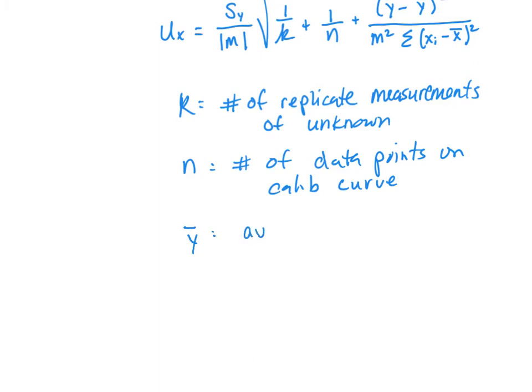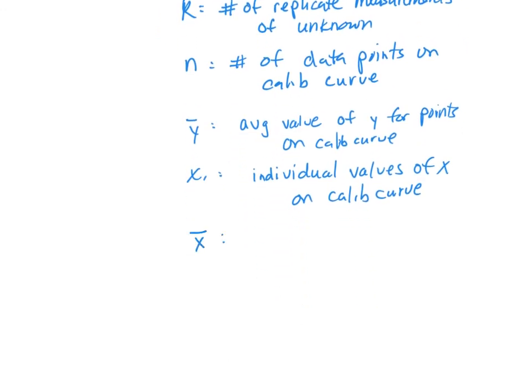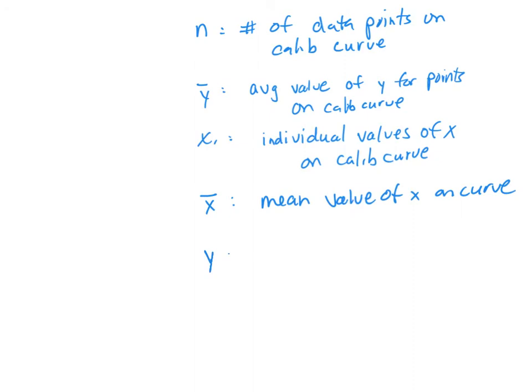y bar is the average value of y for the points on the calibration curve. x sub i are the individual values of x on the calibration curve, and x bar is the mean value of x on the calibration curve. So the only thing we didn't list here is y. y is going to be the response from the unknown.